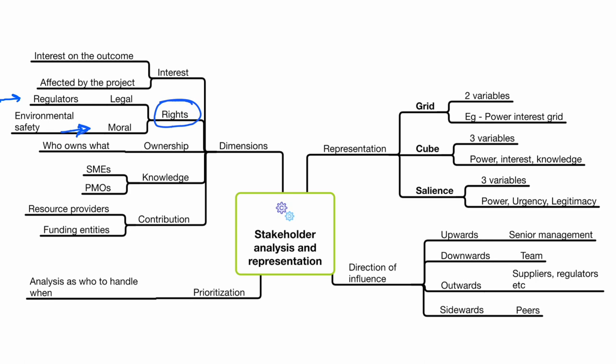Another dimension is ownership. If you want to build something on land that's not yours, you have to talk to the owner or buy it. Similarly with a website plugin — you need ownership rights. Those who own something you are using are stakeholders. Knowledge workers, subject matter experts, and PMO who know best practices are also stakeholders. Contribution is another dimension — if someone is giving you money or resources, they are stakeholders.